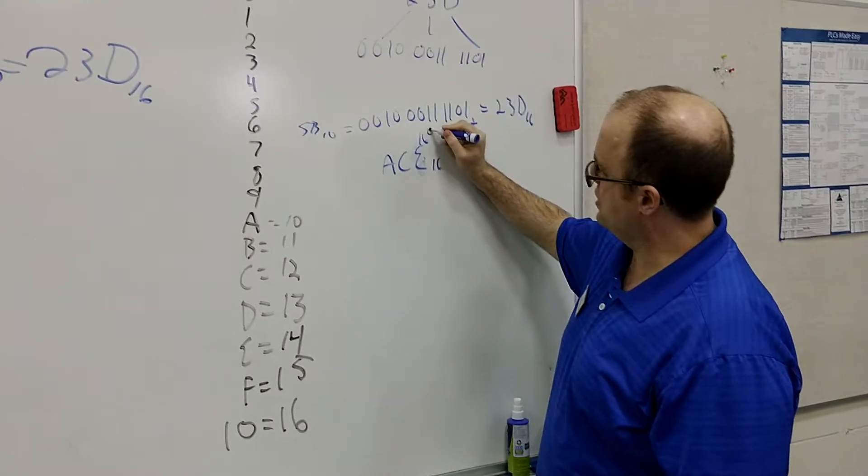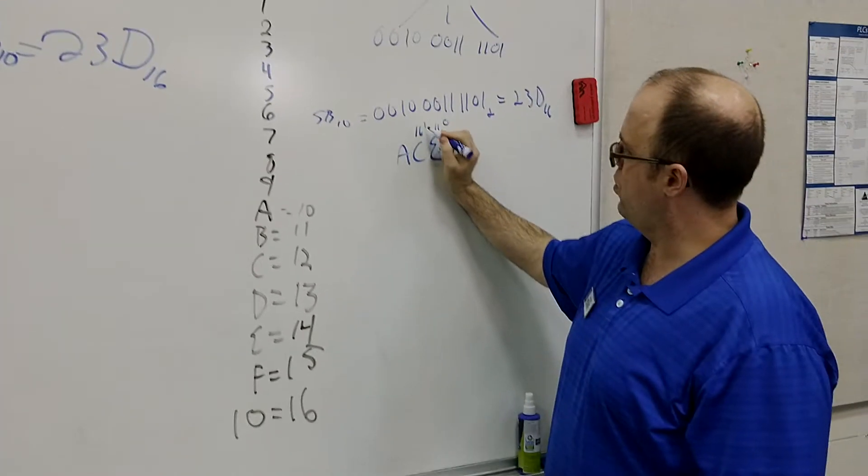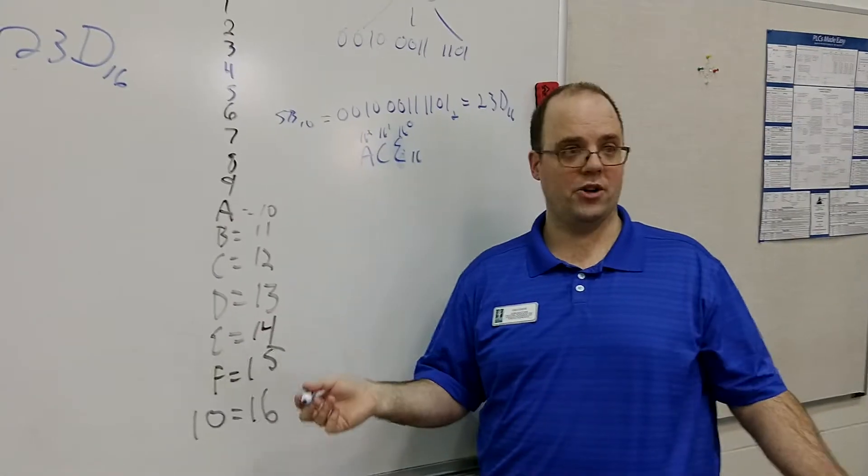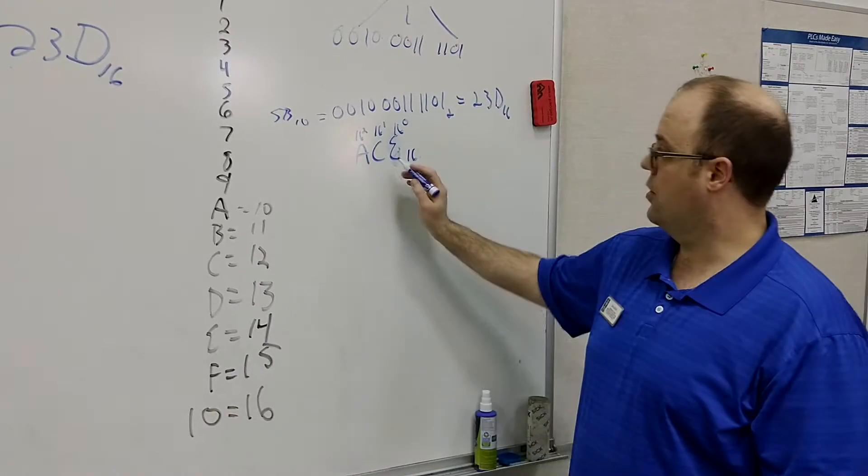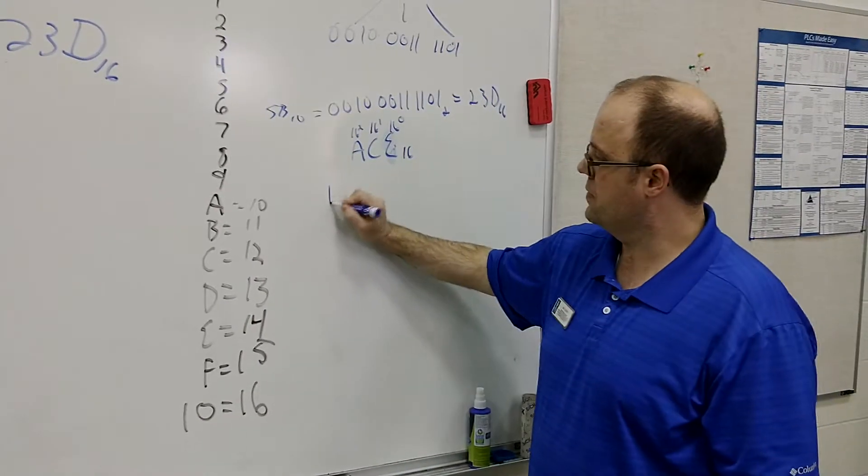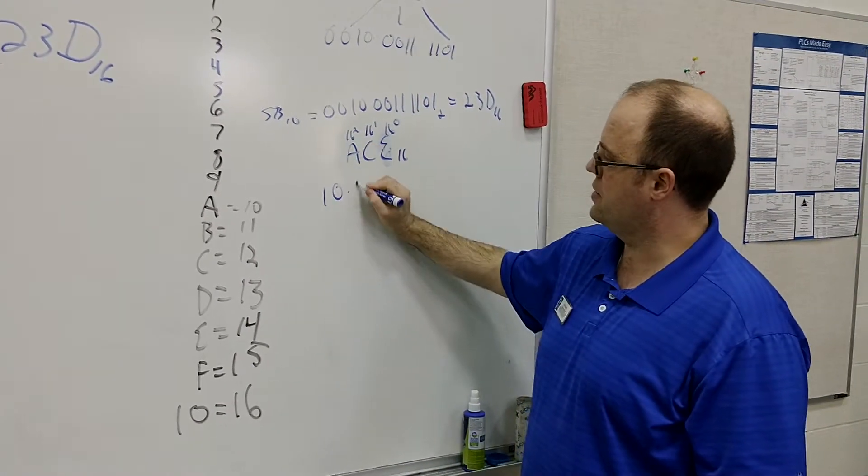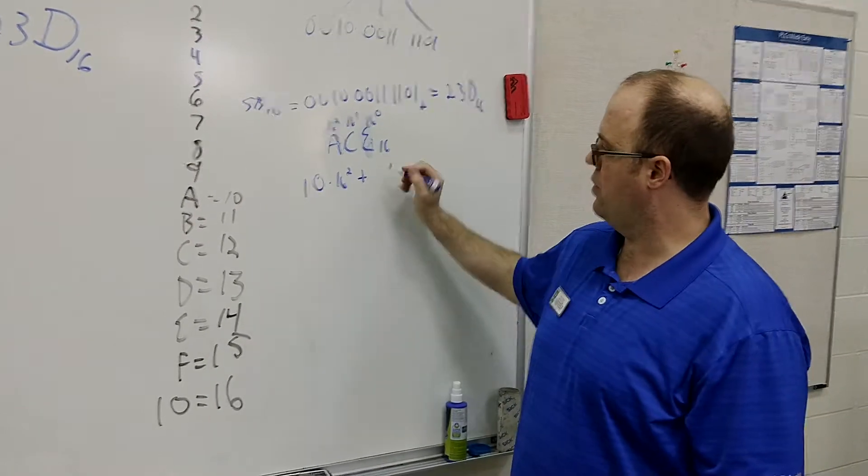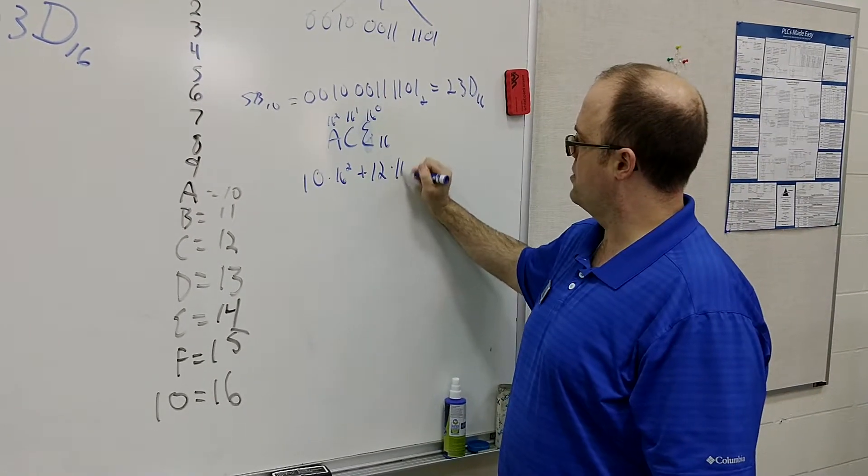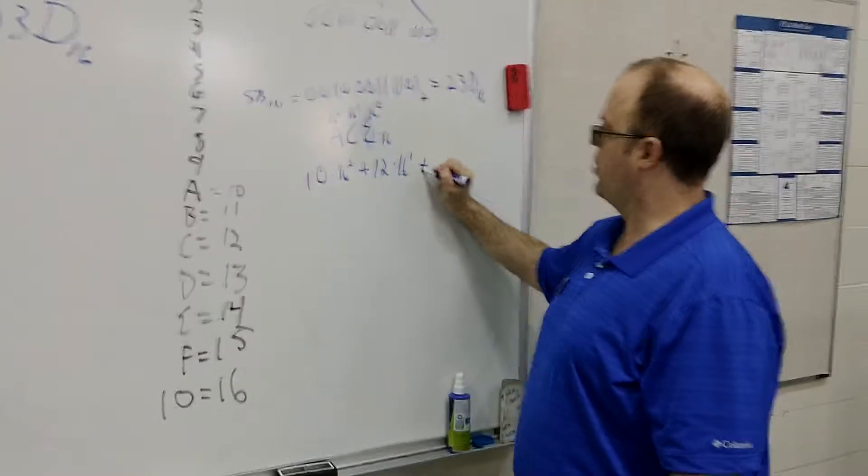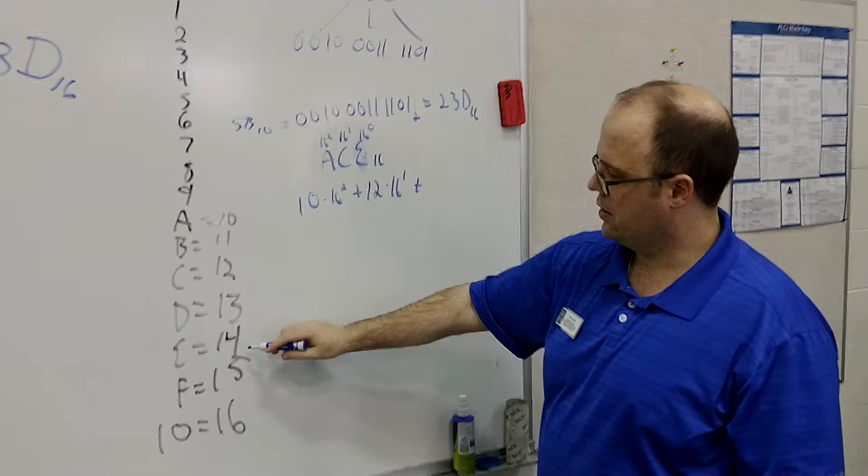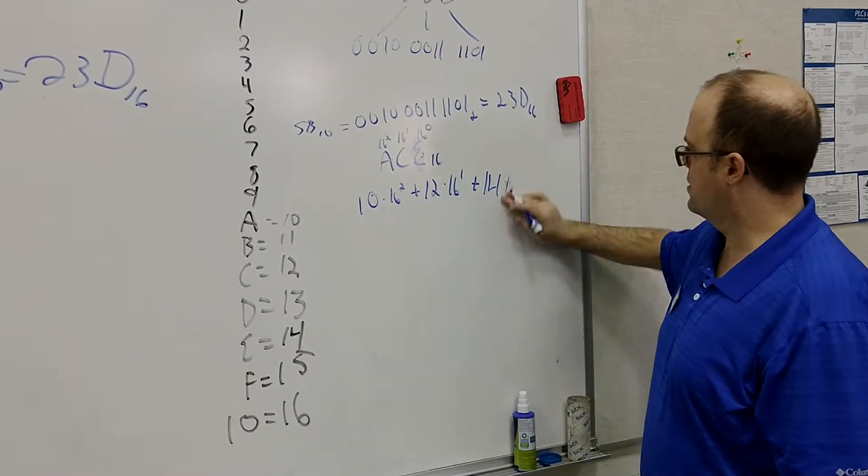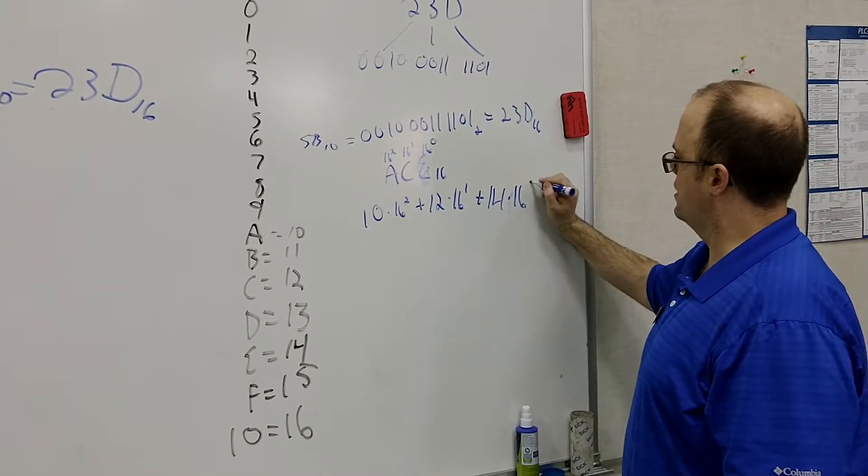And how we would do this is just like we would do in binary. So let's see these placeholders here. Think of this as 16 to the 0, 16 to the 1, and 16 to the 2. And we just would multiply the equivalent. So we know A equals to 10. So 10 times 16 to the 2 plus C is equivalent to 12. 12 times 16 to the 1 plus E, equivalent to 14, times 16 to the 0.